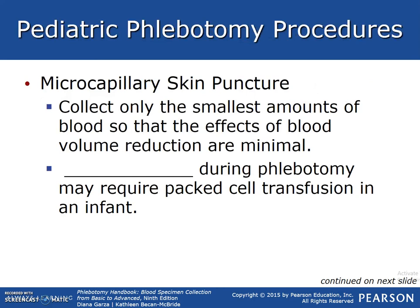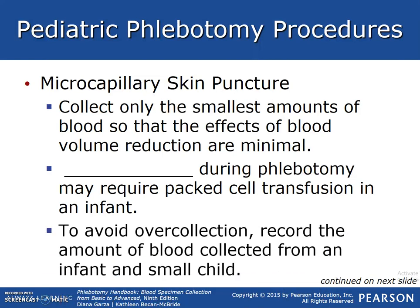Microcapillary skin puncture: collect only the smallest amounts of blood so that the effects of blood volume reduction are minimal. Overcollecting during phlebotomy may require packed cell transfusion in an infant. Record the amount of blood collected from an infant and child because we need to track weight to volume so that we don't introduce iatrogenic anemia in infants.